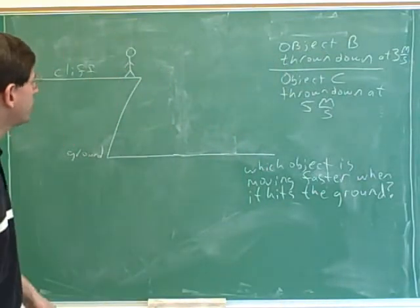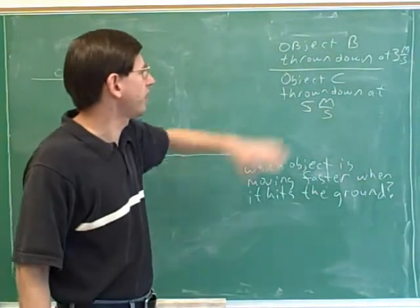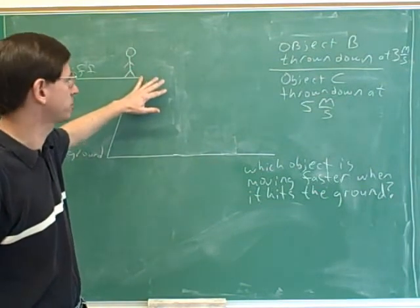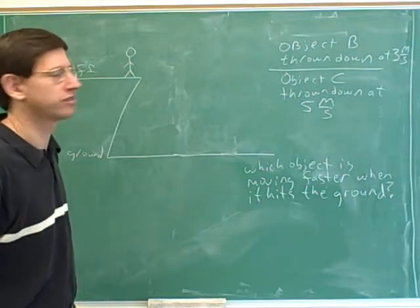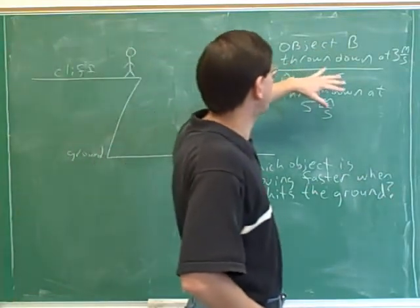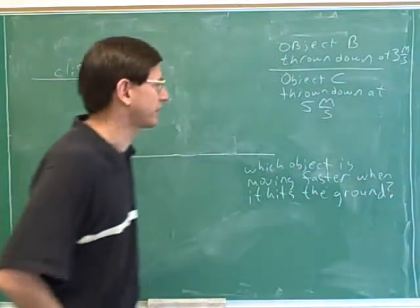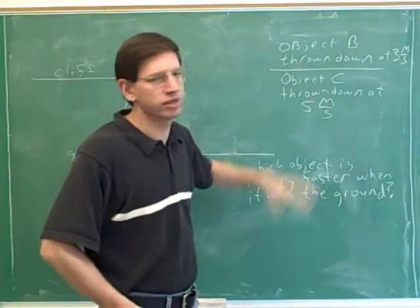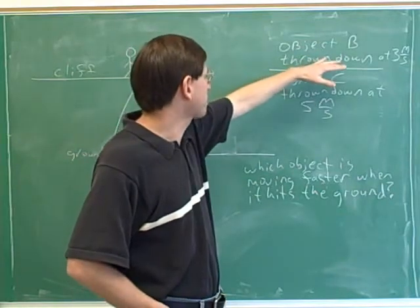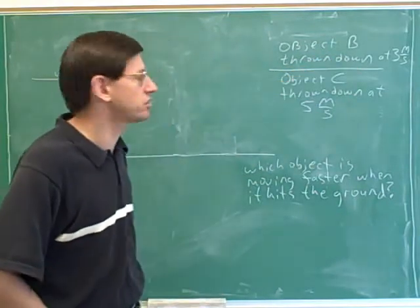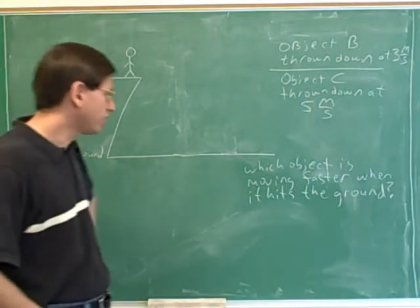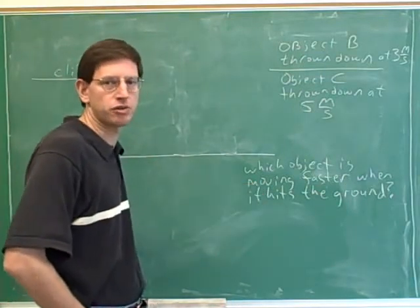Now let's make a different comparison — object B and object C. Both of these objects are being thrown down from the cliff towards the ground. Object B is being thrown down at an initial speed of 3 meters per second and object C is being thrown down at an initial speed of 5 meters per second. Which object is moving faster when it hits the ground?